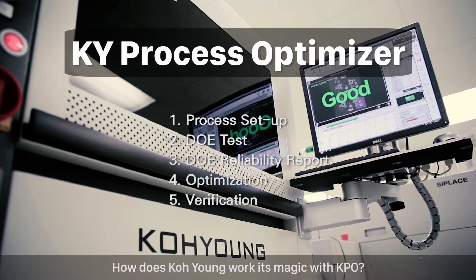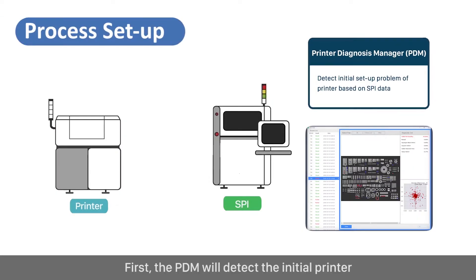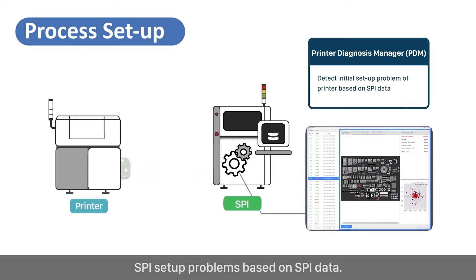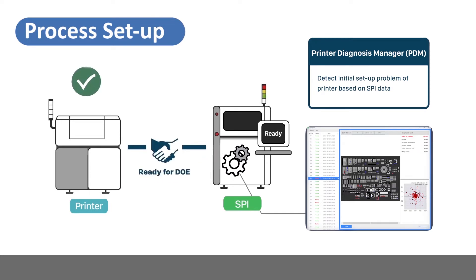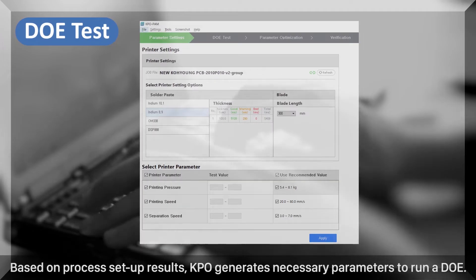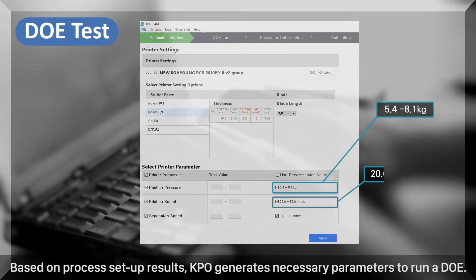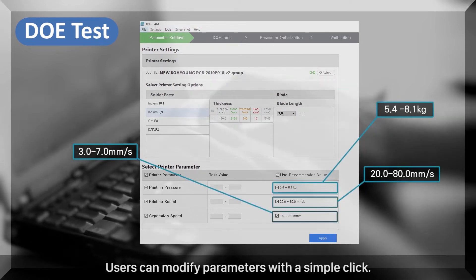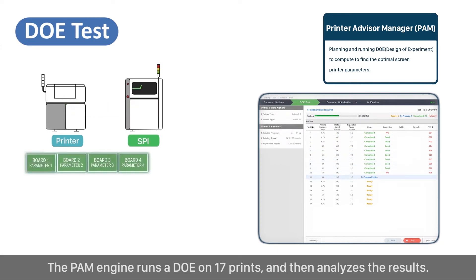How does Koyoung work its magic with KPO? First, the PDM will detect the initial printer-SPI setup problems based on SPI data. Based on process setup results, KPO generates the necessary parameters to run a DOE. Users can modify parameters with a simple click. The PAM engine then runs a DOE on 17 prints and analyzes the results.